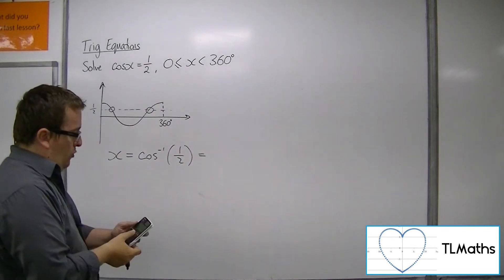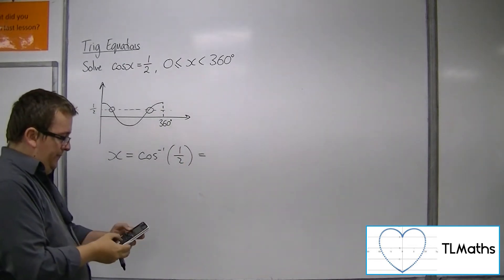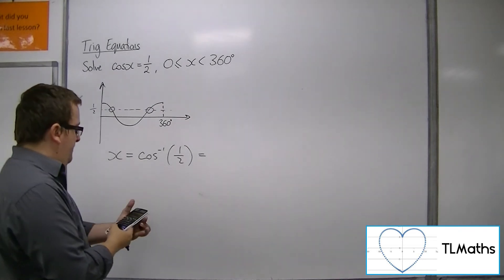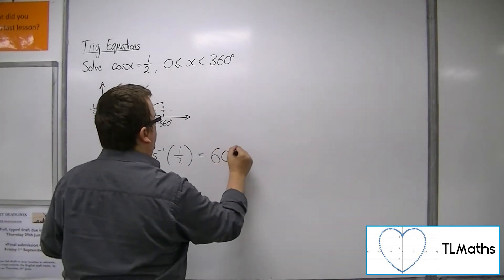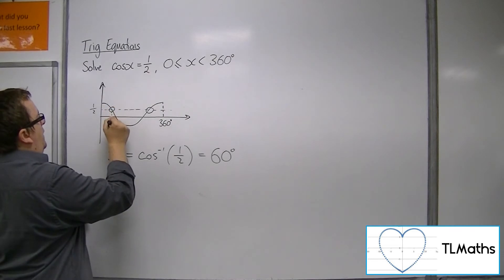So make sure your calculator is in degrees. Inverse cos of a half is 60 degrees. So this is your first solution.